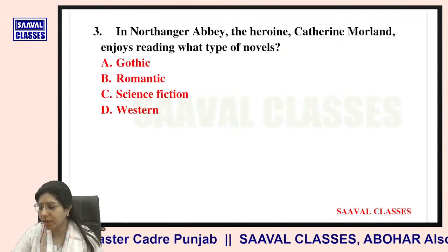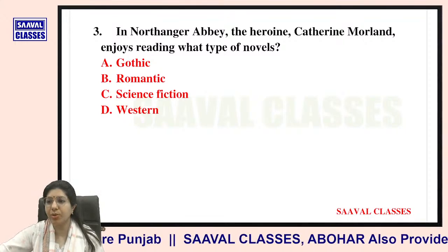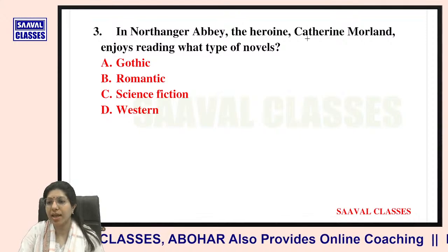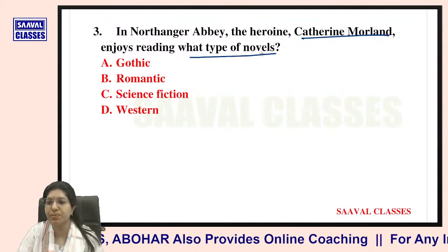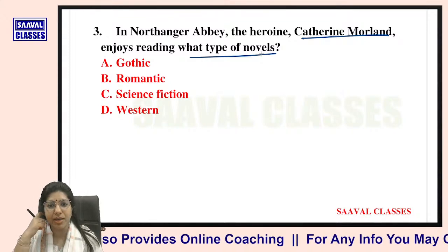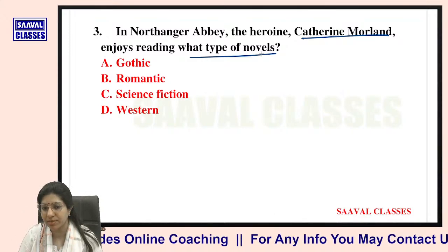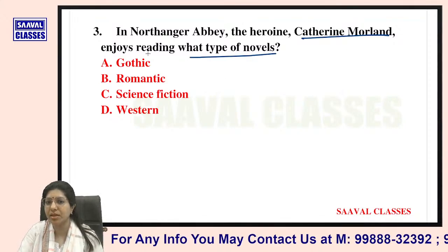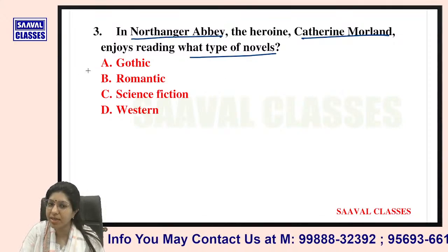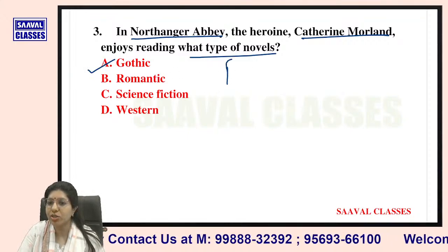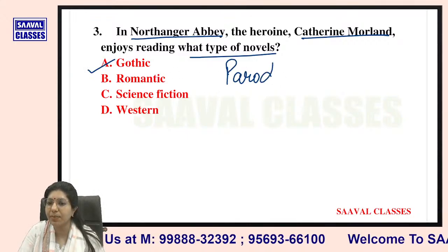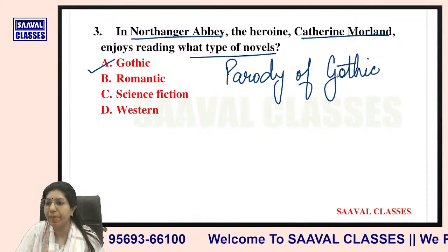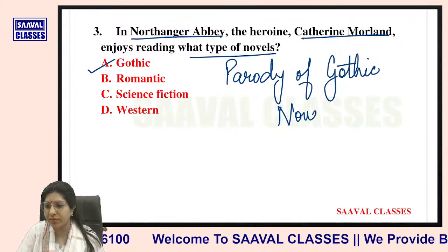Question number three: In Northanger Abbey, the heroine Catherine Morland enjoys reading what types of novels? Options are Gothic, romantic, science fiction, or western. Catherine Morland likes reading Gothic novels. Northanger Abbey is also called a parody of Gothic novels.